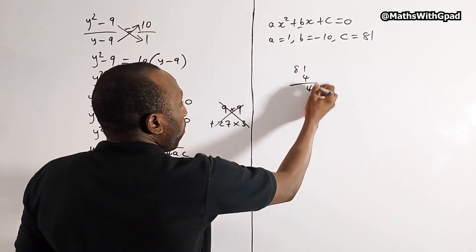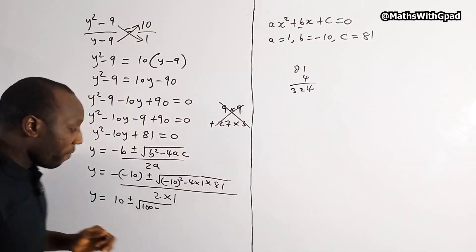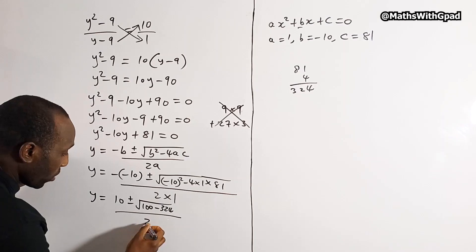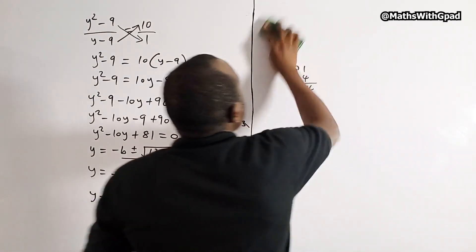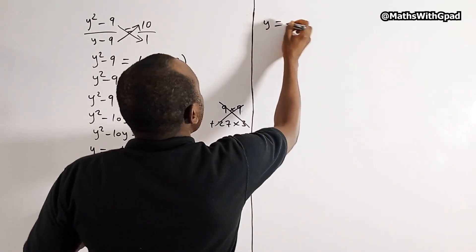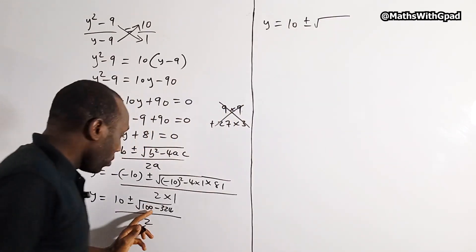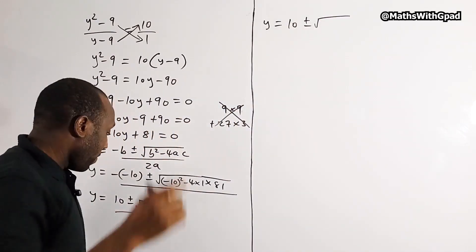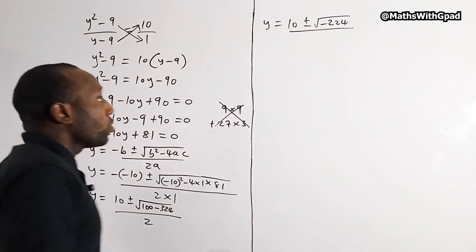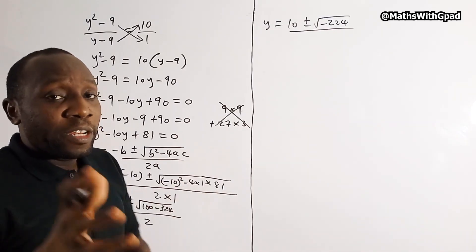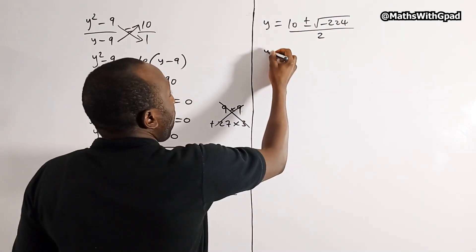Now 4 times 81 is 324. So we have y equals 10 plus or minus the square root of 100 minus 324, which is negative 224, all divided by 2. Since we have a negative number under the square root, it looks like we're going to have an imaginary number.